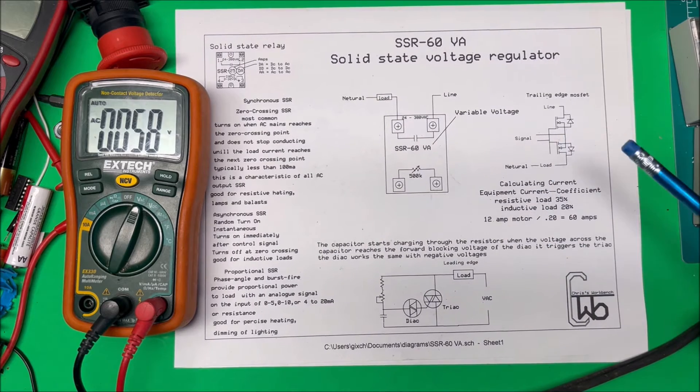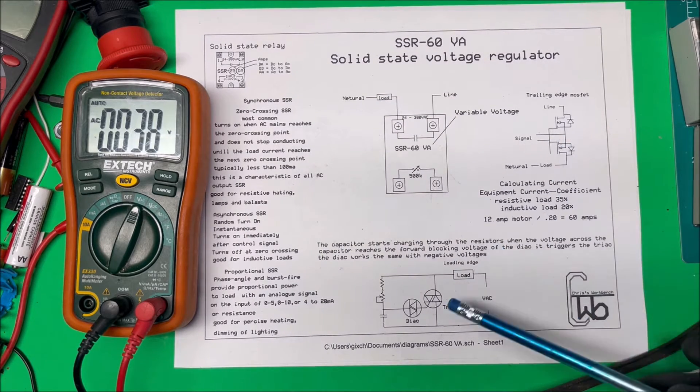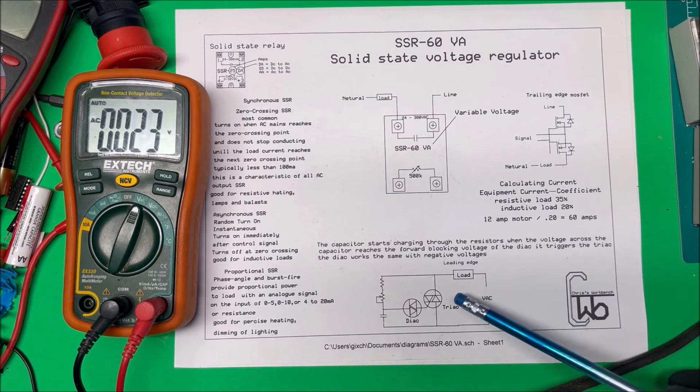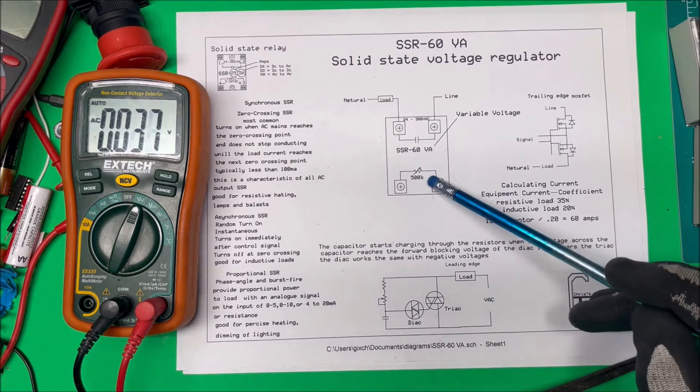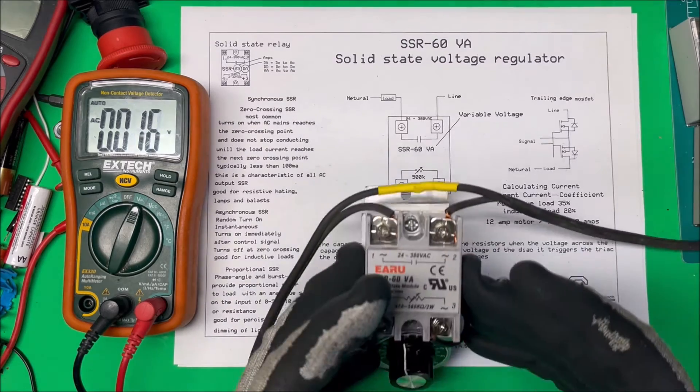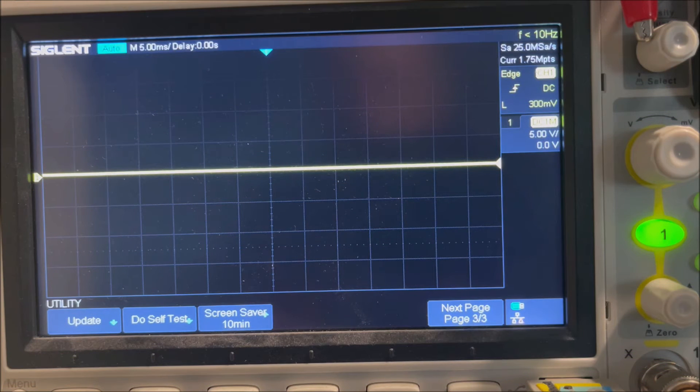This one clips the leading edge, this one's trailing edge. What we're going to do is go over to the scope and put this on the oscilloscope and see what happens. My bet's on this one because this is a cheap unit, it was only six dollars shipped to me, so I doubt if they're going to put a couple MOSFETs in there. So we'll go to the scope.